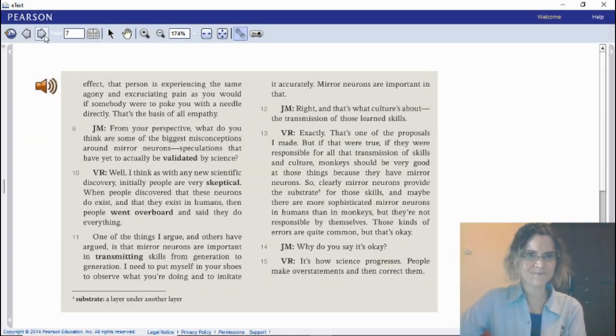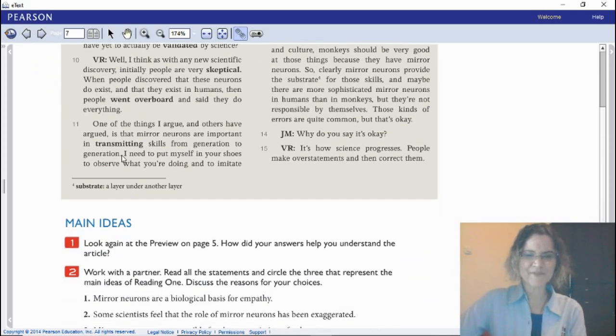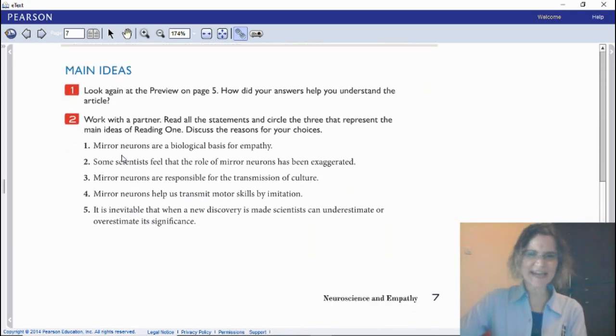We come to the part of main ideas. Number one: Look again at the preview on page five. Remember the two questions: What does it mean to put yourself in another person's shoes? And number two: How do you feel when you see someone cry or suffer? You wrote answers to these two questions as a preview before reading the text. Now, how did your answers to those two questions help you understand this article? Did it give you any guideline? Did it give you any focus?